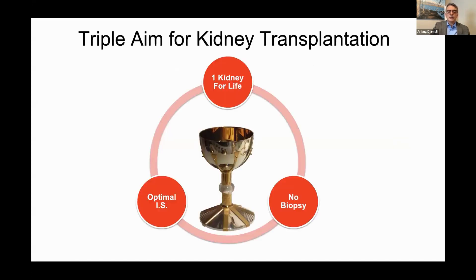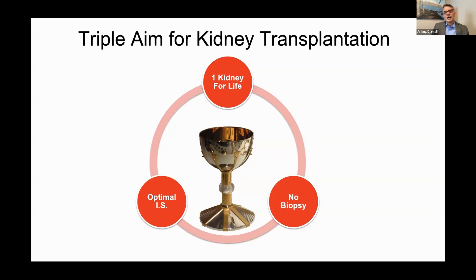What we are going to talk about today is what I call the triple aim for kidney transplantation. I don't think that anyone would argue that if we could achieve this goal, we would really reach the Holy Grail in transplantation. People talk about the Holy Grail being tolerance, but I'm not as optimistic or as ambitious. I would say if we can achieve one kidney transplant for life, optimal immunosuppression — that is no rejection, but also no infections, no cancer — so precision medicine, and no kidney allograft biopsy, that would be a huge achievement.